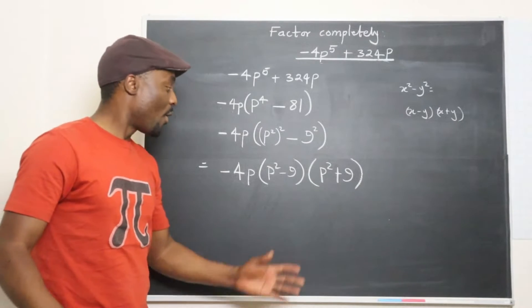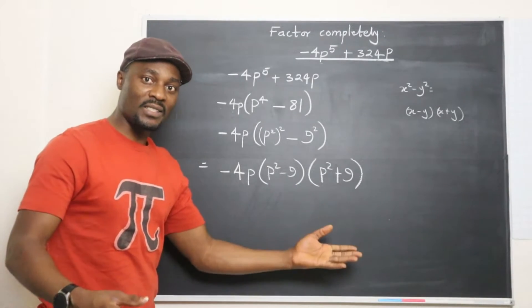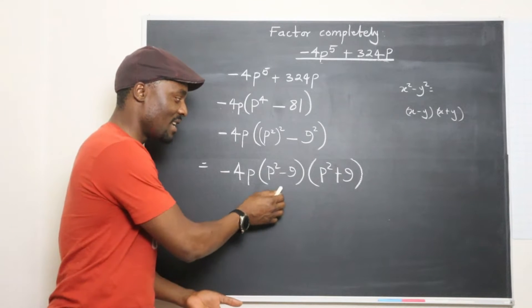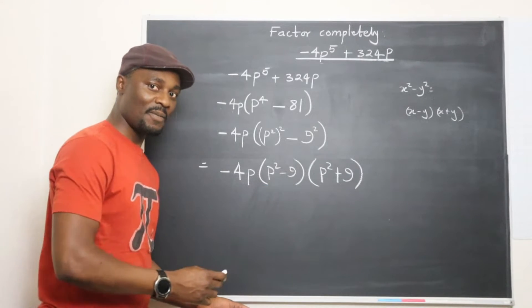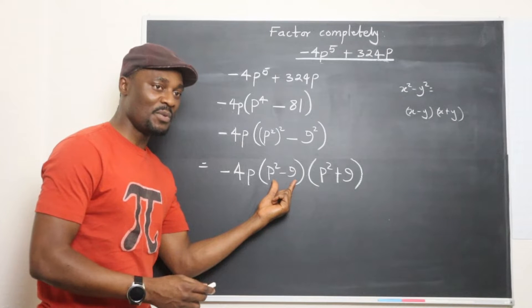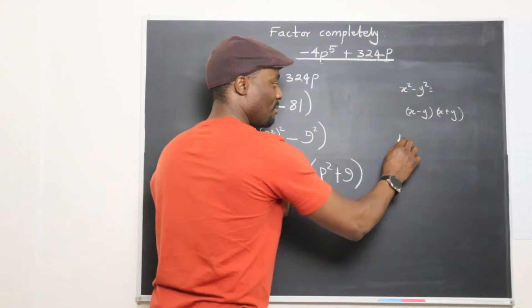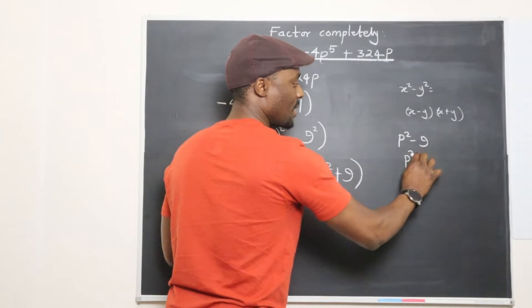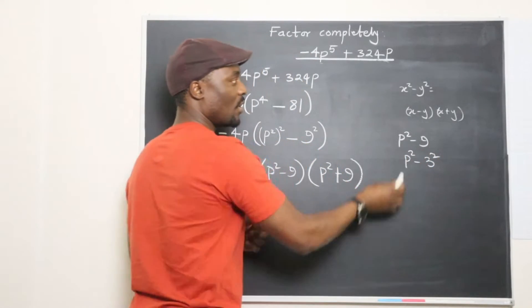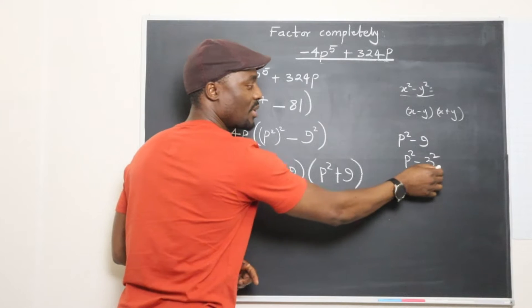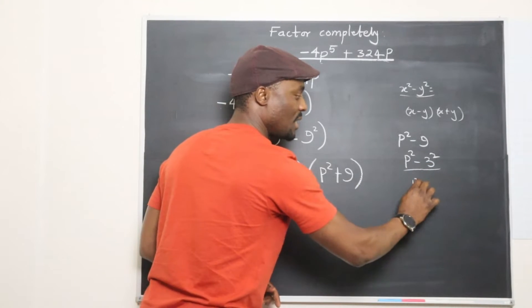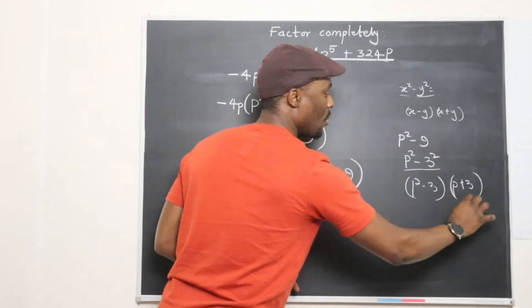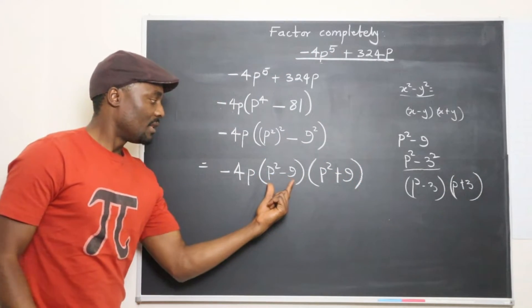Now with this, we're not done because another situation has been created. We have another difference of two squares. So this difference of two squares can be written as, remember that P squared minus 9 is the same thing as P squared minus 3 squared. So we can break this down and write it as P minus 3 and P plus 3.